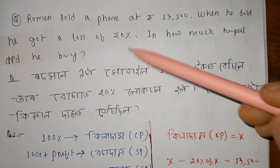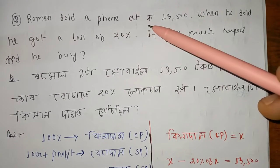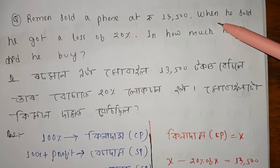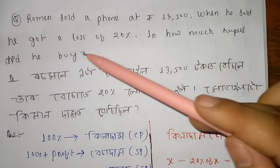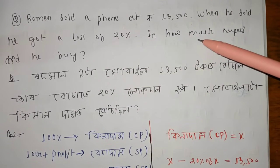First of all, Roman sold a phone at $13,500. When he sold it, he got a loss of 20%. In how many rupees did he buy it? This is an easy question.